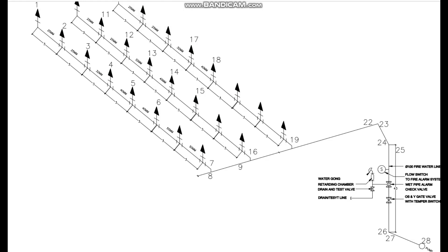Good morning friends. In this hydraulic calculation video, we are going to size a fire pump for a high-rise building. The building consists of basement plus ground floor plus 13 storeys, with a height of 43 meters. This is the isometric drawing given for the building, which consists of all the sprinklers, alarm check valves, and zone control valve assemblies. We will do the hydraulic calculation from the sprinklers all the way to the pump and decide the pump size.